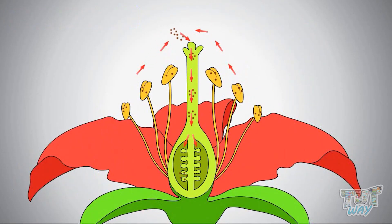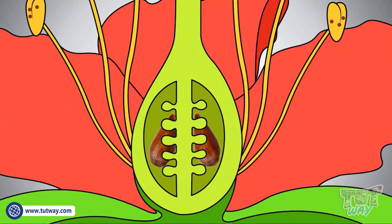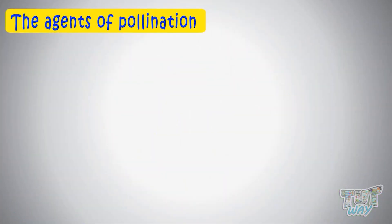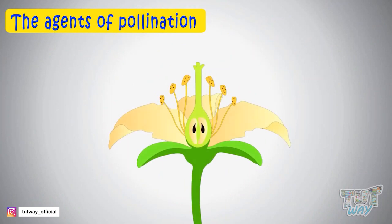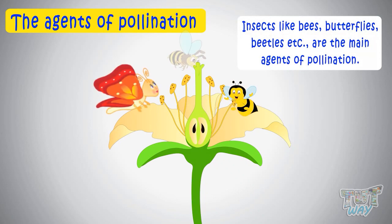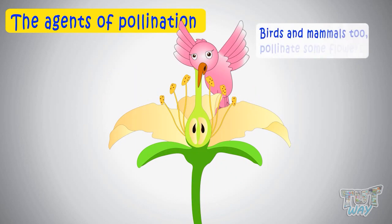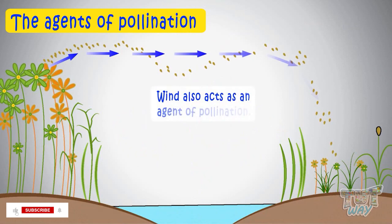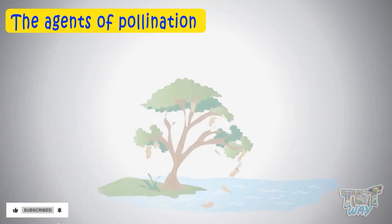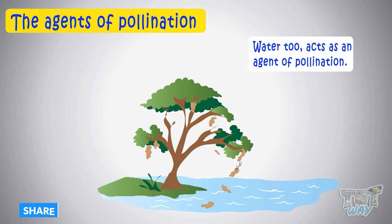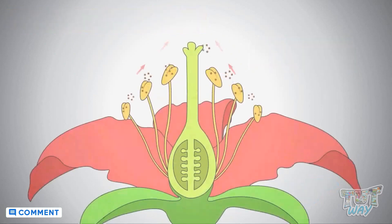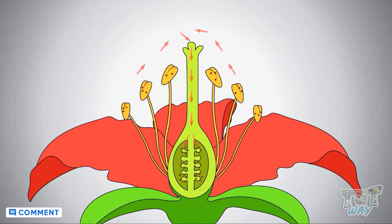Now we will learn about different agents of pollination. Insects like bees, butterflies, and beetles are the main agents of pollination. Birds and mammals too pollinate some flowers. Wind also acts as an agent of pollination, and water too acts as an agent of pollination.